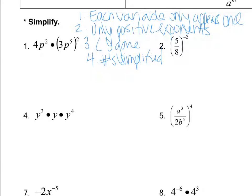In example four, notice we are multiplying powers of the same base. There's no written exponent on one term, but that's implied as y to the first. You add the exponents together: three plus one plus one plus four gives y to the eighth. Keep the base the same.